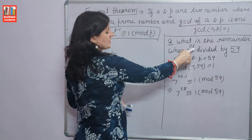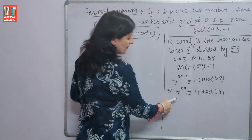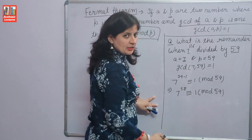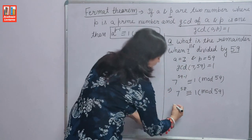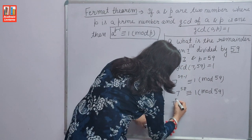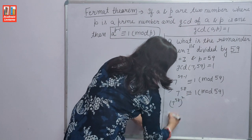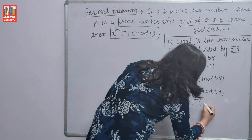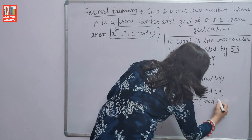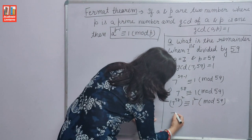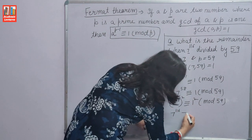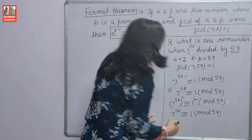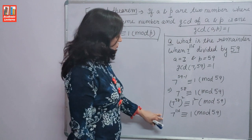We need to find the value for power 116. We found 7 raised to the power 58. If we multiply the power by 2 — i.e., square it — the answer remains the same. 7 raised to the power 58 squared is congruent to 1 squared modulo 59. So 7 raised to the power 116 is congruent to 1 modulo 59.